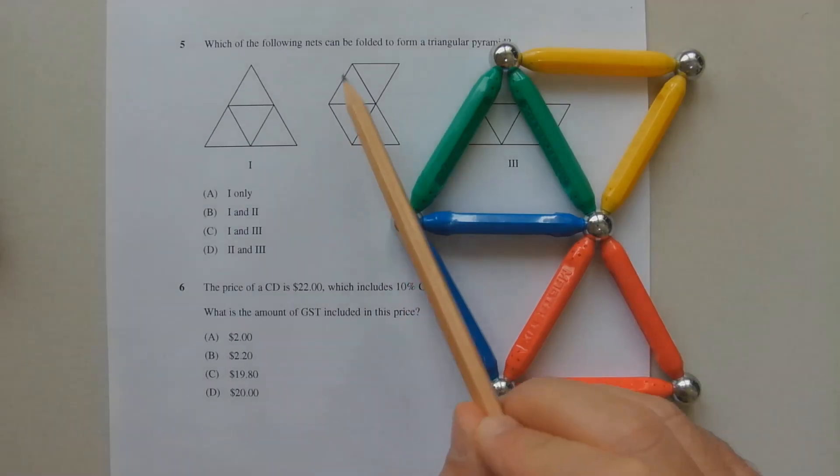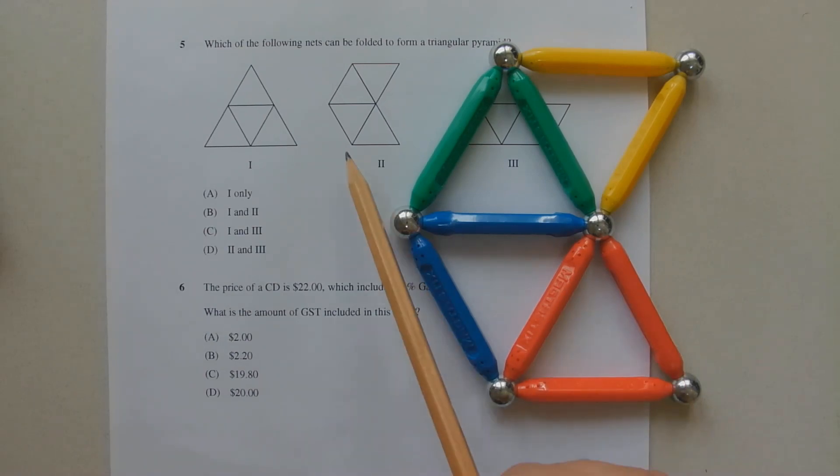Let's consider the second net. The red triangle is this triangle here at the bottom. The blue triangle is this triangle here. The green triangle is this triangle here, and the yellow triangle is this triangle here at the top.